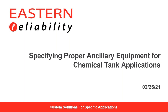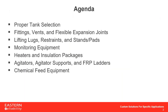Good afternoon everyone, thanks for taking the time to join us. Today we'll be discussing specifying proper ancillary equipment for chemical tank applications. The agenda includes reviewing proper tank selection, various types of fittings, vents, flexible expansion joints, lifting lugs, restraints and tank stands, tank monitoring equipment, means for heating and insulation packages, tank agitator systems, ladder options, and chemical feed equipment that Eastern Reliability can assist with specifying and designing.